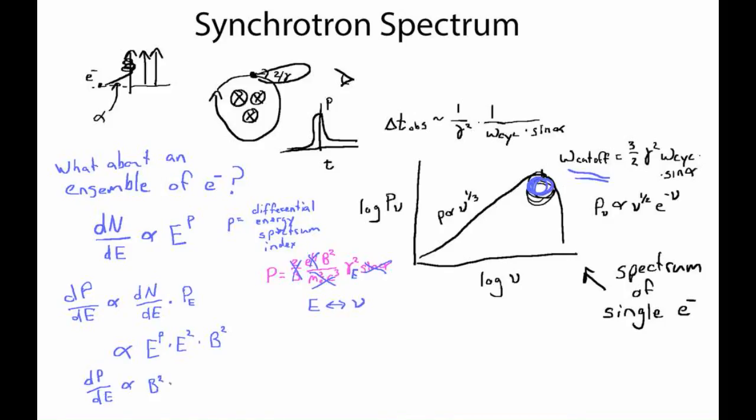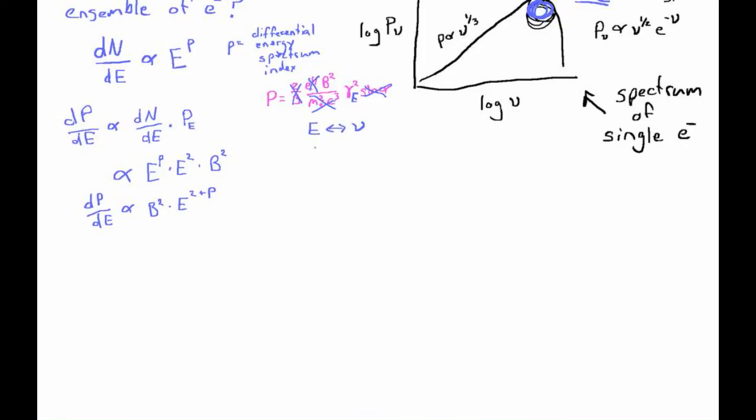And then we'll start incorporating our idea here that we can relate an energy of an electron to a single emitted frequency to change this e down here into a nu. Now our expression for the cutoff frequency said that nu was going to be proportional to gamma squared times the cyclotron frequency. The cyclotron frequency had a factor of the magnetic field in it, b. And as we just argued, gammas are proportional to energy, so nu is going to be proportional to e squared b. Remember this e is the energy of the electron emitting. So said another way, then e is proportional to nu over b to the 1 half power, which means that dE is proportional to nu to the minus 1 half times b to the minus 1 half d nu.